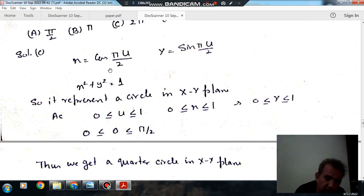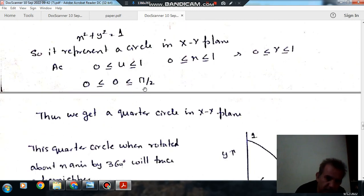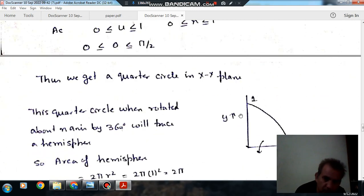Now if you put the limits of u as 0 to 1, it means the limits of θ are 0 to π/2. So this is the quarter of the circle, starting from θ = 0 and ending at θ = π/2.